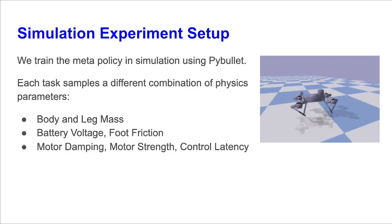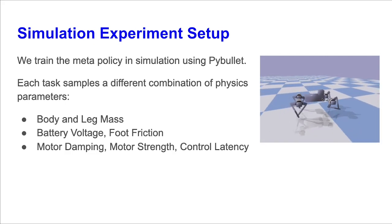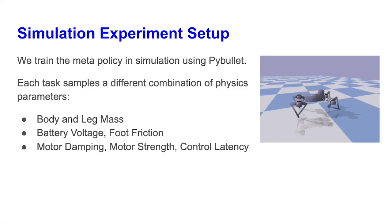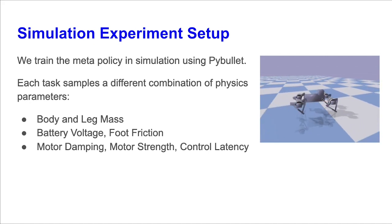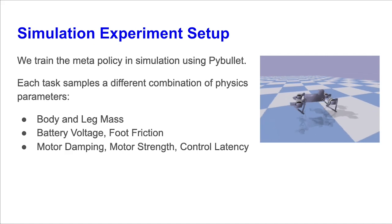We train the meta-policy in simulation using the PyBullet Simulator, which allows varying physics parameters. Most notably, these consist of leg and body mass, battery voltage, foot friction, motor damping, motor strength, and control latency. We can then sample different combinations of physics parameters, where each combination corresponds to a task in meta-learning.